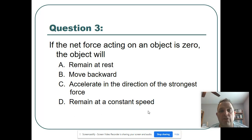If the net force acting on an object is zero, the object will remain the same, move backwards, accelerate in the direction of the strongest force, remain at a constant speed. This is a very good question here. I want you to think about this one. This is one that we can come back to, obviously. But if the net force is zero, I think we can throw out B or C. Now think really hard. Would it remain at rest? Or would it be a constant speed? Think about the definitions we've talked about.